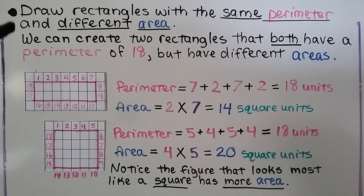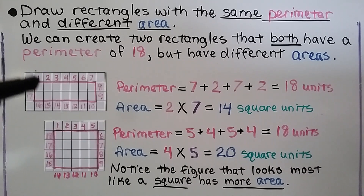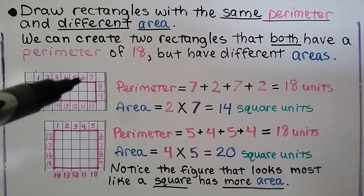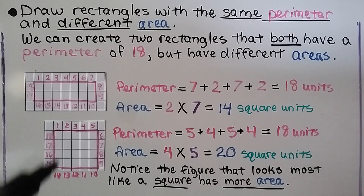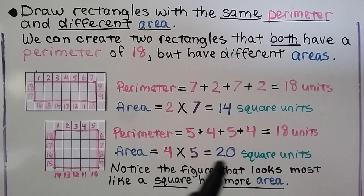Now let's draw rectangles with the same perimeter and different area. We can create two rectangles that both have a perimeter of 18 but different areas. The long rectangle has a perimeter of 7 plus 2 plus 7 plus 2, that's 18 units, and its area is 2 times 7 equals 14 square units. The more square-shaped one has a perimeter of 5 plus 4 plus 5 plus 4, also 18 units, and its area is 4 times 5 equals 20 square units.